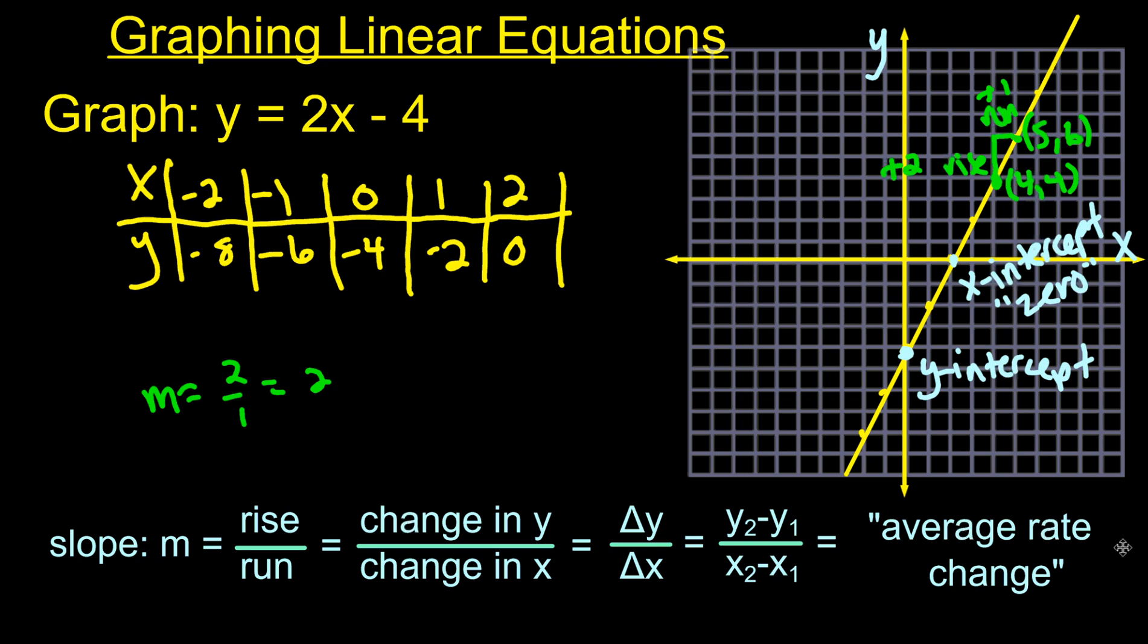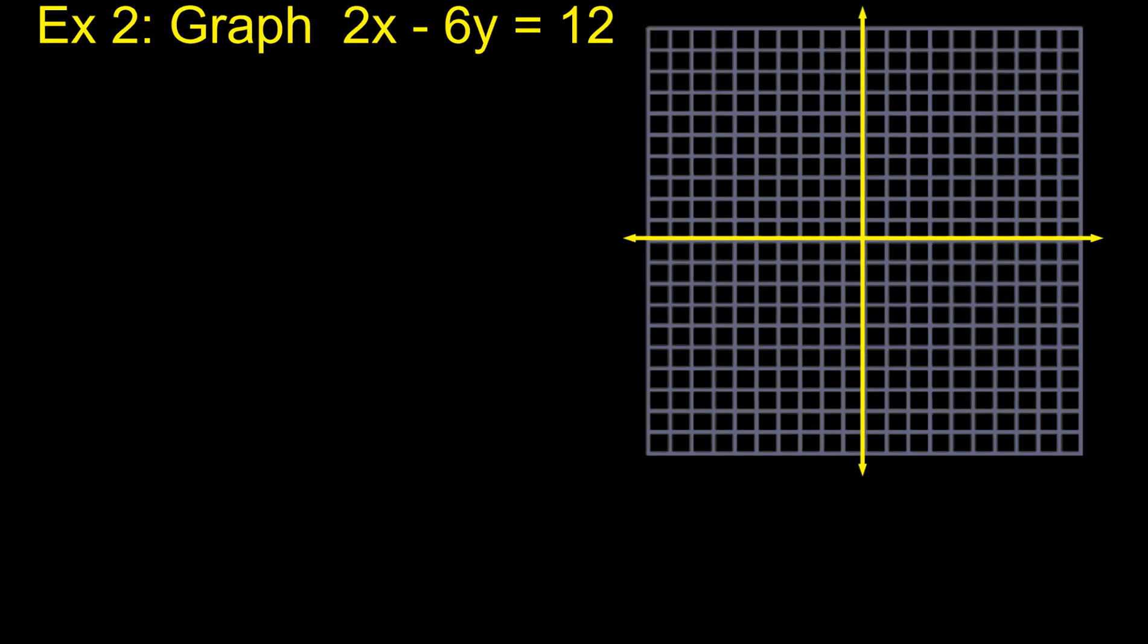Okay. So this was our first example. It's in what's called slope intercept form. If you notice, the Y intercept is at 0, negative 4. And that is in the equation right here. The constant term in the equation is always the Y intercept if it's in slope intercept form. And then this 2 out here, that's the slope. We'll write that down a little bit later.